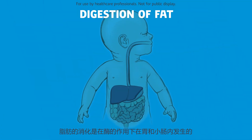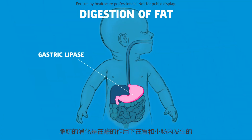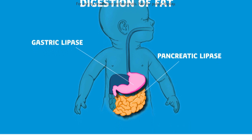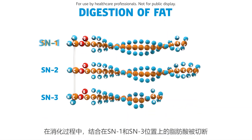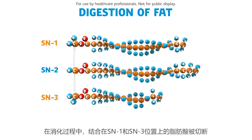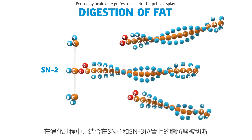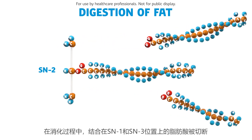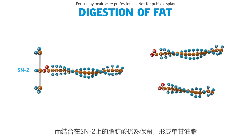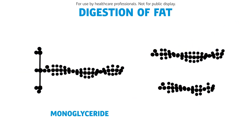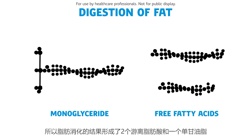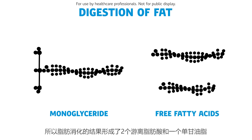Digestion of fat happens by enzymes in the stomach and in the small intestine. During digestion, fatty acids on the SN1 and SN3 position are being cut off from the backbone. The fatty acids at the SN2 position remain connected — this is called a monoglyceride. So, the digestion of fat results in two free fatty acids and one monoglyceride.